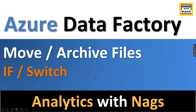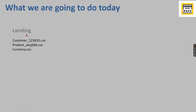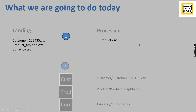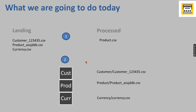With that note, let's begin what we are going to do today. We have three files with some naming. The first thing is we are going to check the condition — if the file contains 'product', only that file we will move. Second is a switch statement: if the first part of the file is 'customer' we'll move it to the customer folder. We'll extract the first four letters and check whether it's 'cust', 'prod', or something else, then move it to the respective folders.